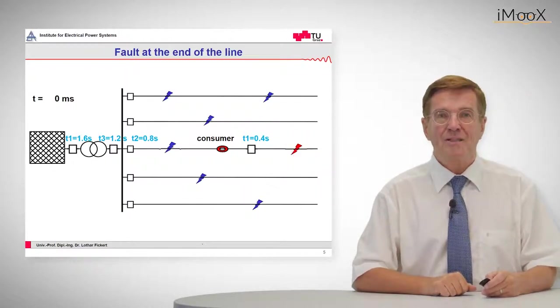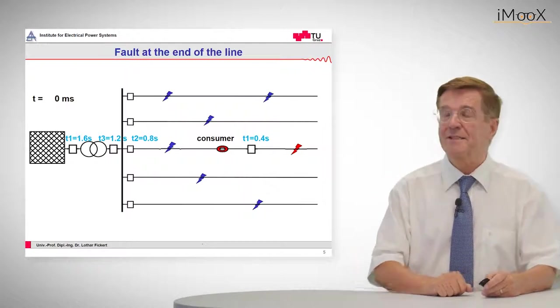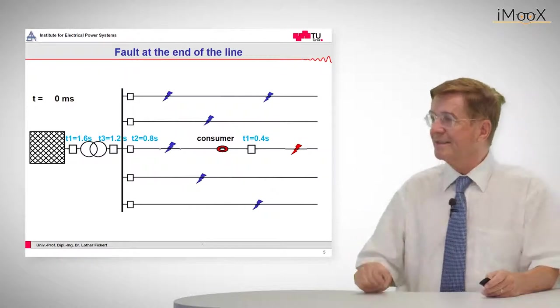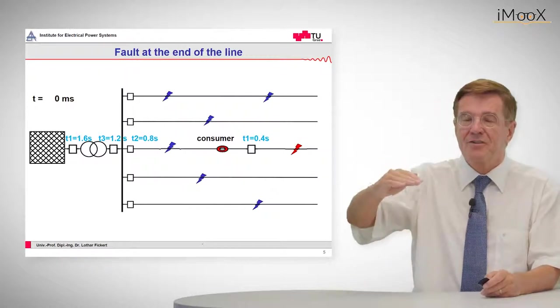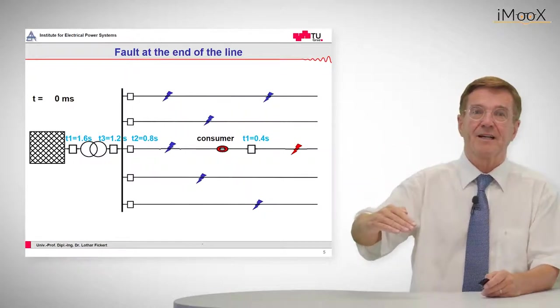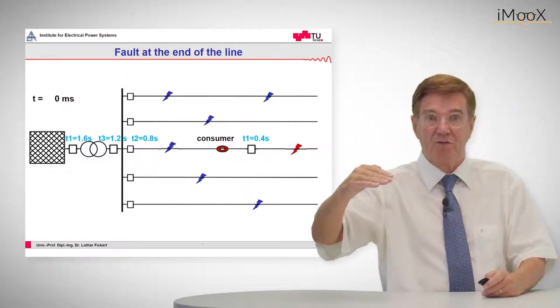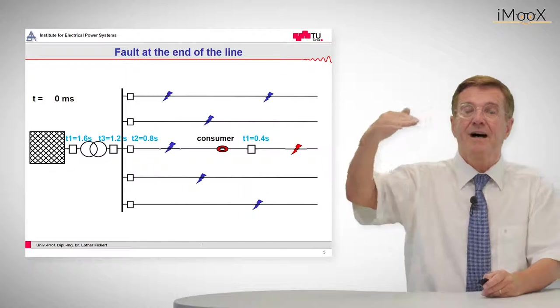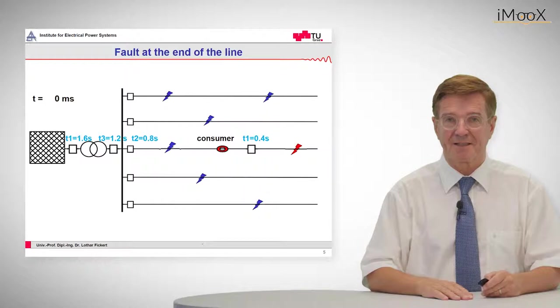So how does overcurrent protection react? In light blue you can see to my right side the tripping times which are continuously going up from the end, 0.4 seconds, to the beginning of the line, 0.8 seconds, to the low voltage side of the transformer, 1.2 seconds, and the upper voltage side of this transformer with 1.6 seconds.